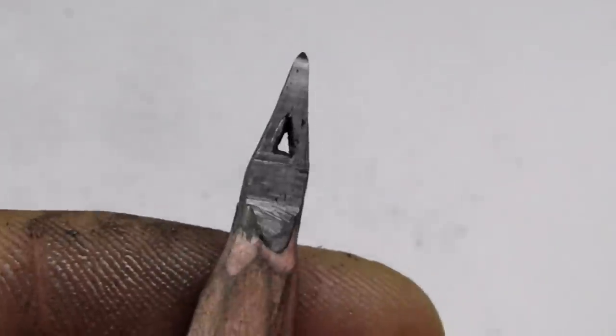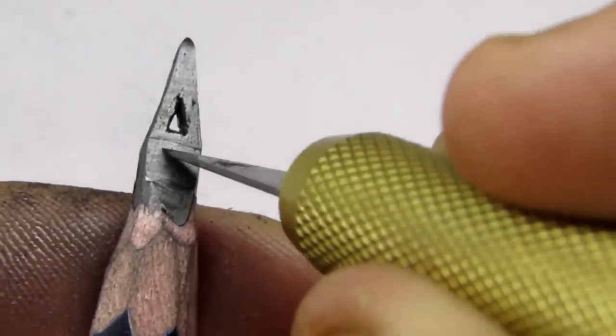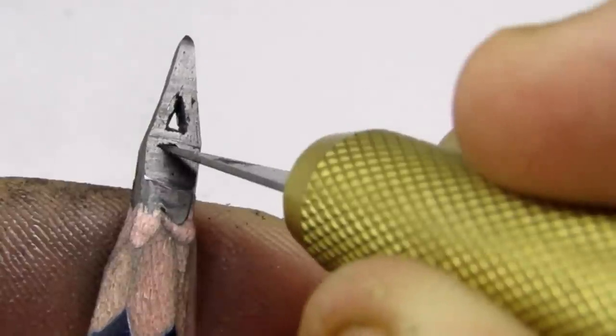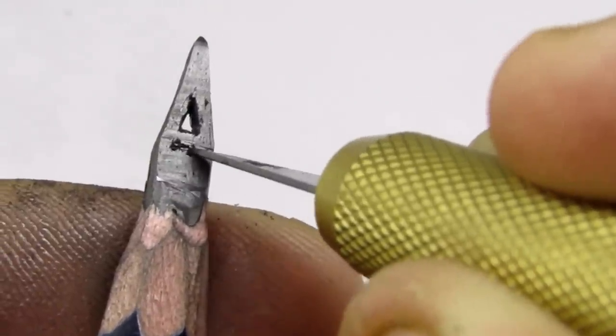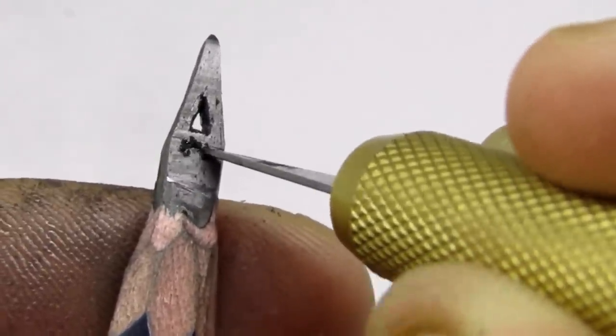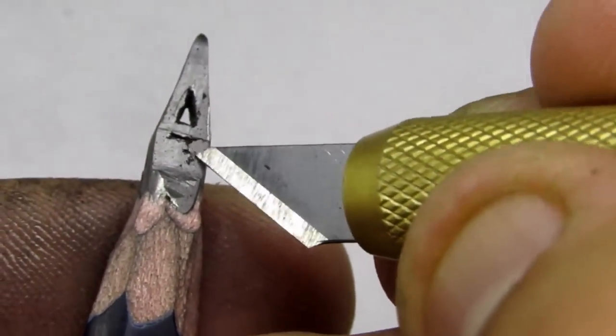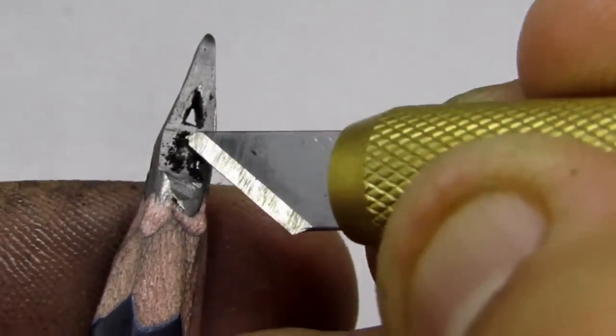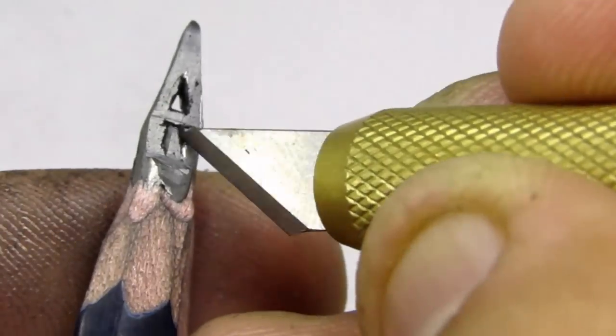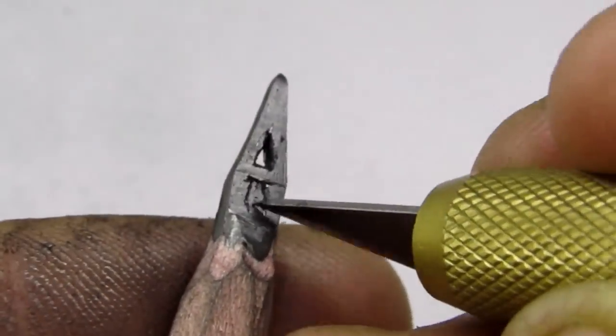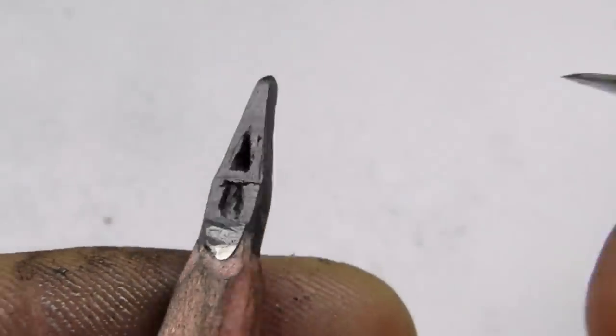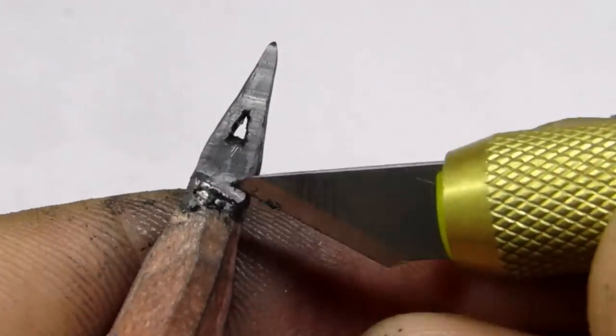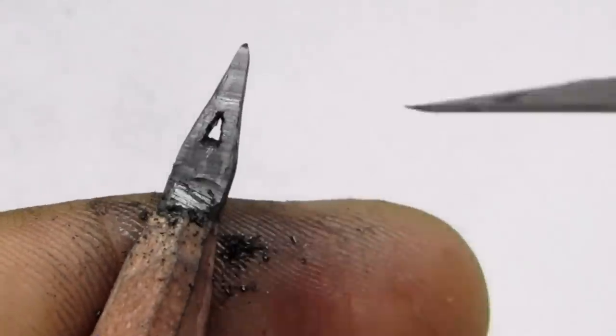Okay, the upper side is ready now, moving on to the lower side. Now I'm gonna clear some more lead on the lower side and flatten it.